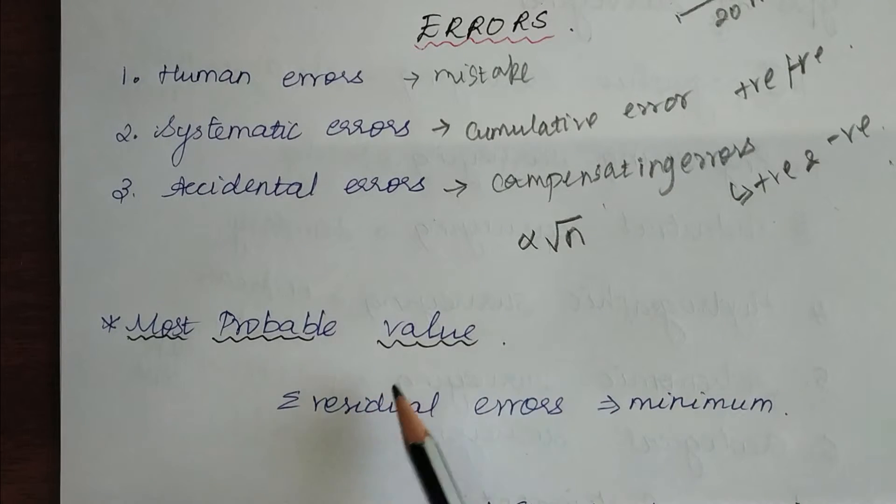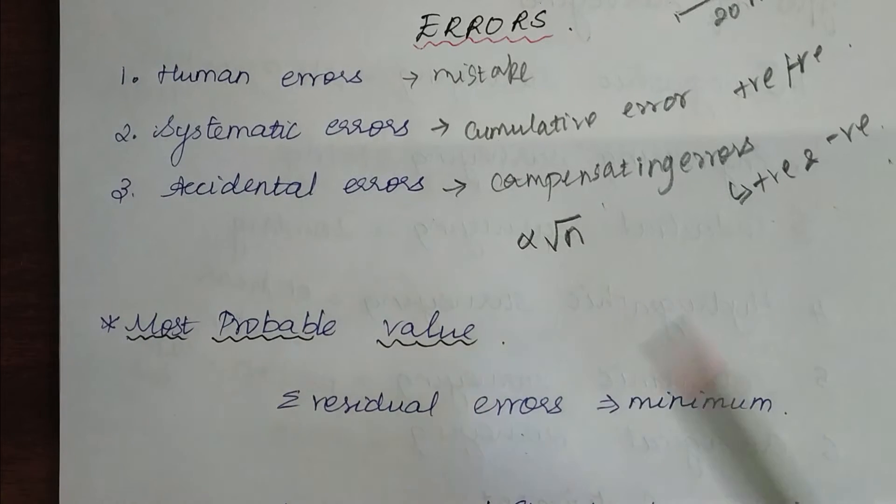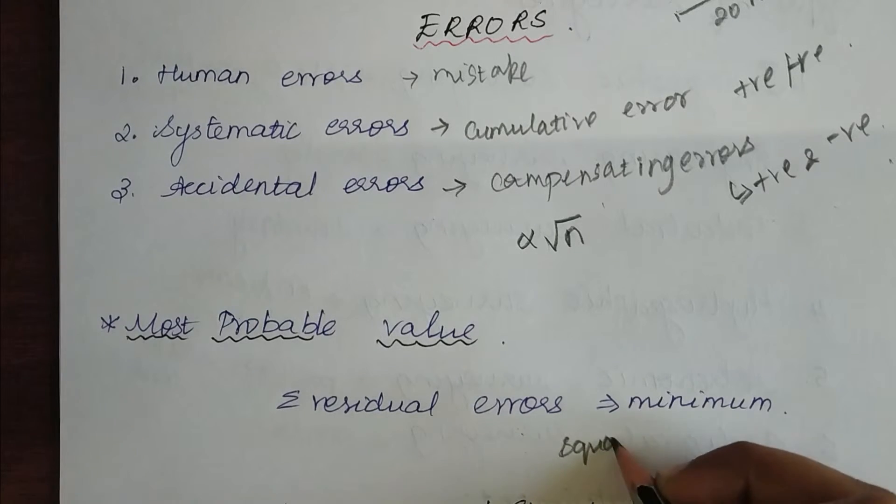It can be found using a formula where we add all the residual errors together. Whichever set of observations produces the least amount of residual errors is called the most probable value. Residual errors are nothing but square of the errors.